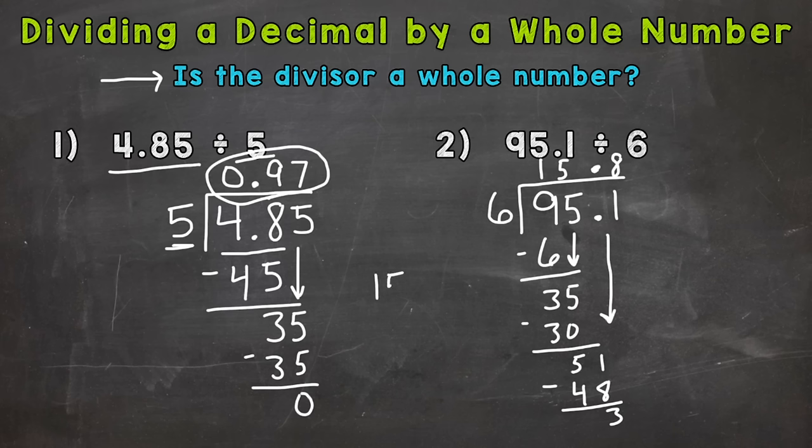So this is something we cannot do. We do not put 15 and 8 tenths remainder 3. Because when we're working with decimals, any decimal within your answer is the remainder. So we are putting our remainder in decimal form. So we can't put a whole number there, a remainder 3. So we need something to bring down without changing the value of our dividend there, 95 and 1 tenth. So what we can do, we can add a 0 here.